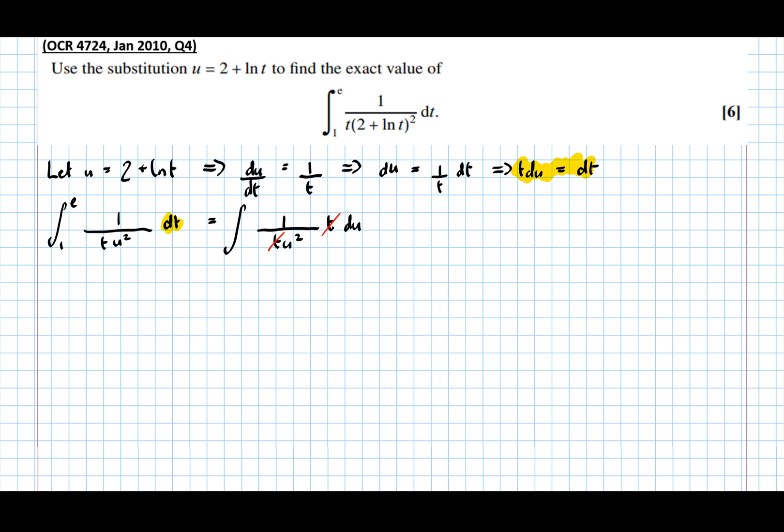Also, going back to the limits now, the limits that we had originally, which are here and here, those two limits are with respect to t. So we've actually changed our integration now to be with respect to u, so we need some new u limits.